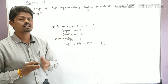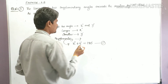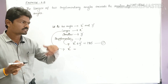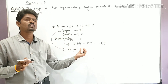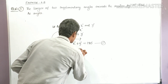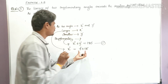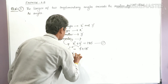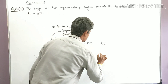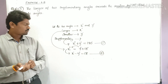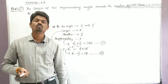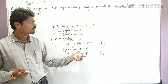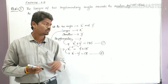He has also given one more relation: the larger angle exceeds the smaller by 18 degrees. The larger angle is x, and it exceeds the smaller y by 18 degrees, so x equals y plus 18. Taking y to the left side, x minus y equals 18. This is our Equation Number 2. From these two equations we can solve for x and y.